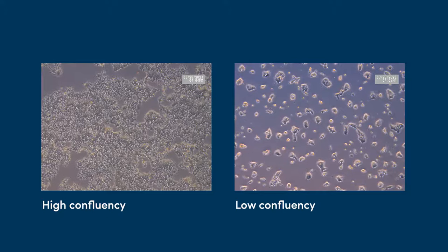Okay, now let's return to the importance of splitting cells. Another reason to regularly split cell lines is to avoid physical overcrowding. Proliferating adherent cells will eventually run out of space in the vessel, becoming a confluent layer.